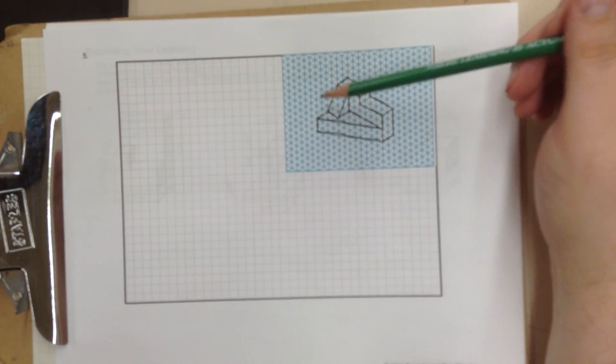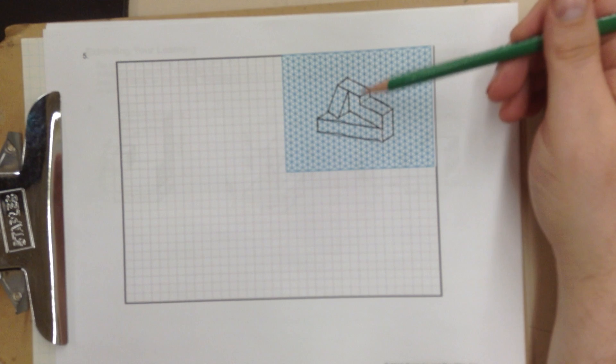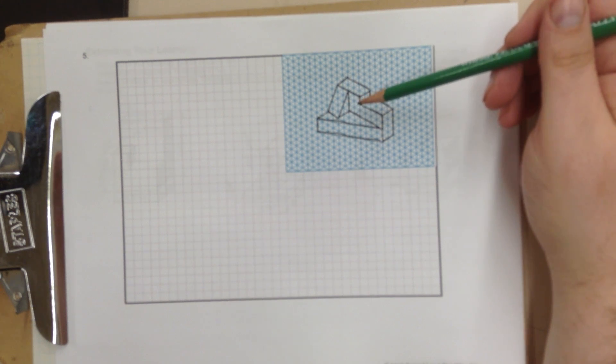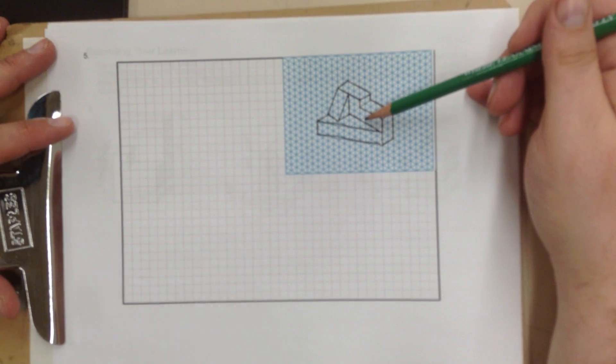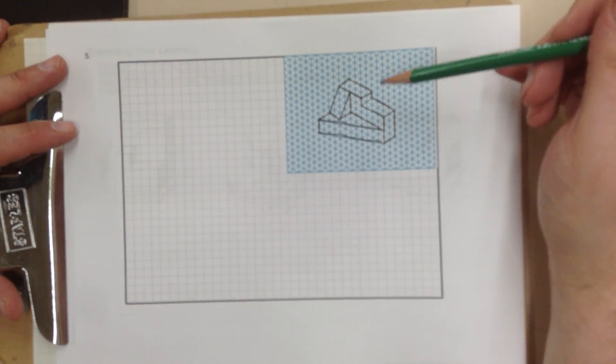Let's go ahead and look at number five on this. We've got an isometric sketch, and this is a fairly complicated drawing right here. So we've got an isometric, and we need to convert this into 2D orthographic.